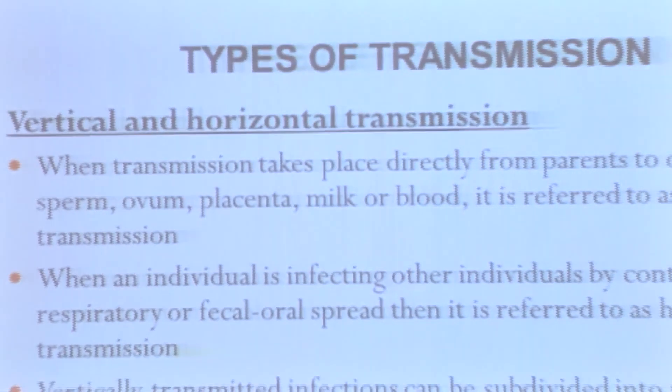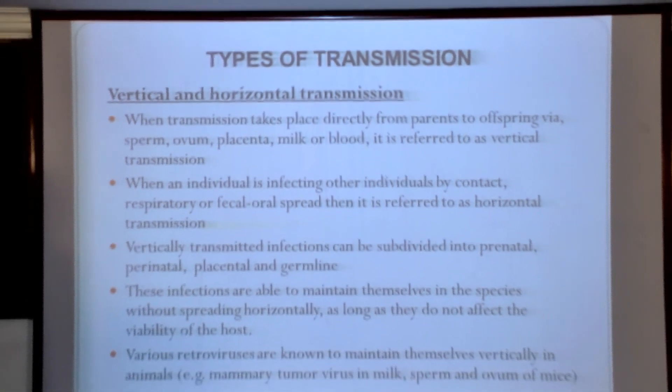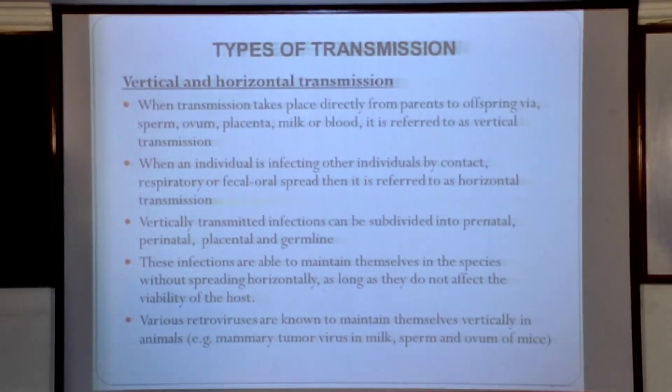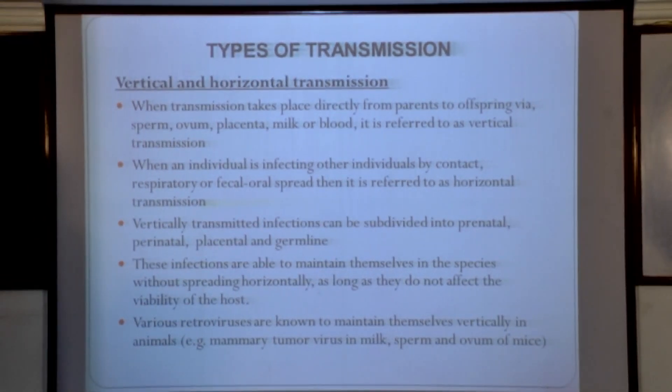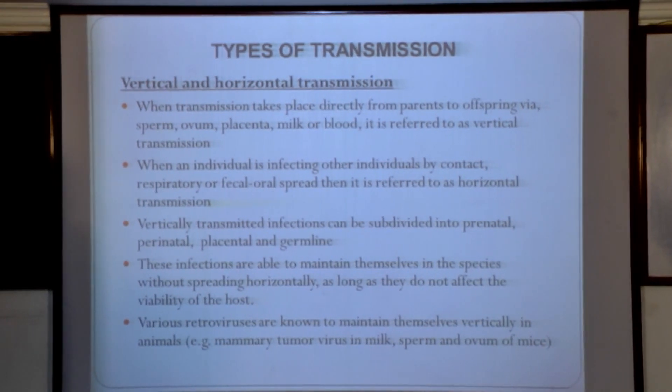We will now consider the types of transmission. There are two types mainly discussed: vertical transmission and horizontal transmission. When transmission takes place from one host to another — for example, from parents to offspring via the sperm, ovum, placenta, milk, and blood — it is referred to as vertical transmission. On the other hand, if the infectious agent is transmitted horizontally from one host to another through either the respiratory tract or the oral route, that is referred to as horizontal transmission.